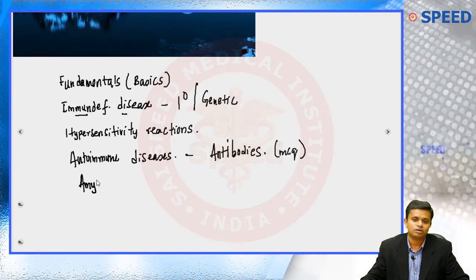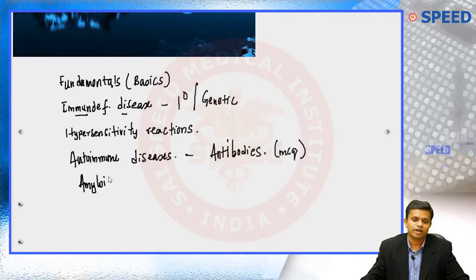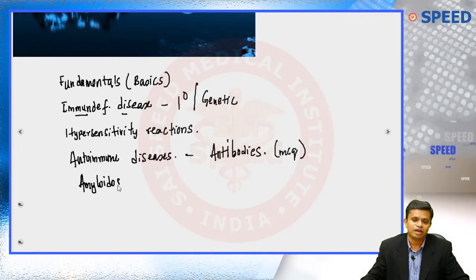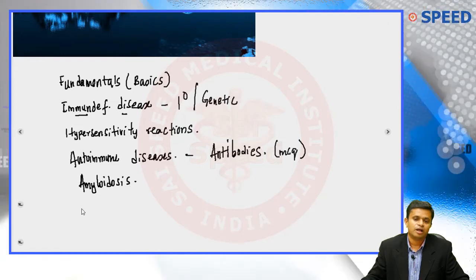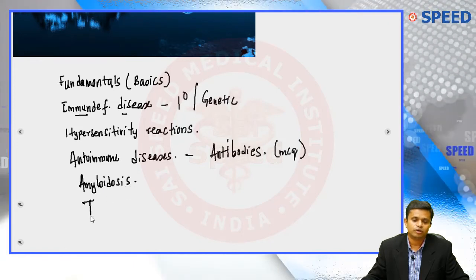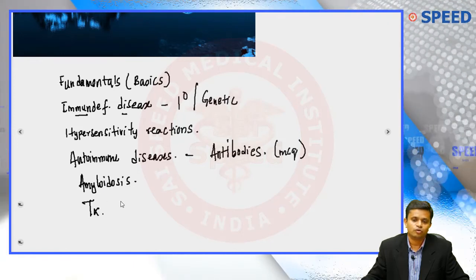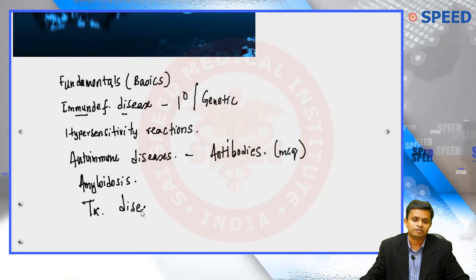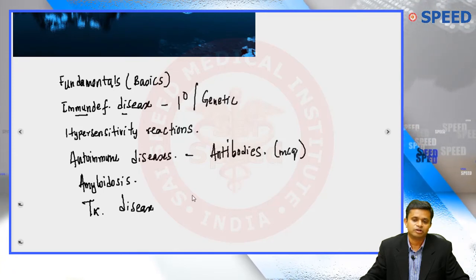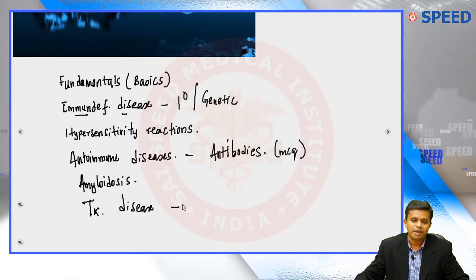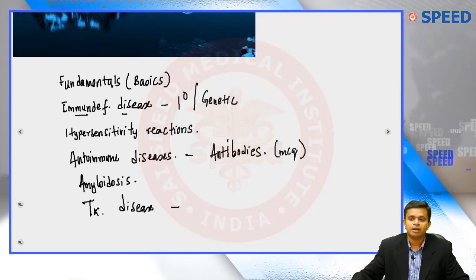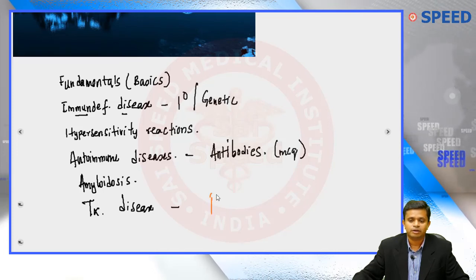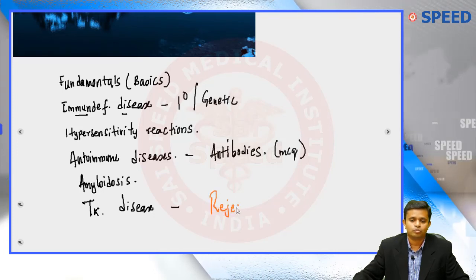After autoimmune diseases, we will cover amyloidosis, where we should learn a lot of key aspects. The last topic to focus on is transplantation diseases — mainly rejection. Keep in mind that rejection is the most important area we will focus on.